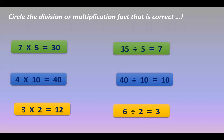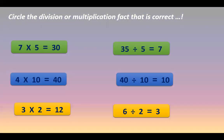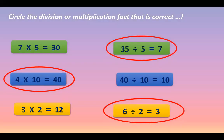Circle the division or multiplication fact that is correct. The questions are: 7 times 5 is equal to 30, 4 times 10 is equal to 40, 3 times 2 is equal to 12, 35 divided by 5 is equal to 7, 40 divided by 10 is equal to 10, and 6 divided by 2 is equal to 3. The correct answers to circle are: 35 divided by 5 is equal to 7, 4 times 10 is equal to 40, and 6 divided by 2 is equal to 3.